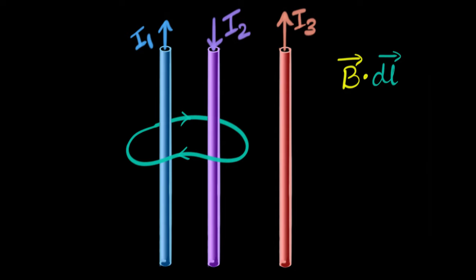So here's what Ampere is saying. At every point in space, the three currents are together producing a magnetic field, right? We know that current produces magnetic field. So maybe at this point, I'm just drawing random directions now. Maybe the magnetic field is this way. Maybe there's a point over here where the magnetic field is, I don't know, maybe this way. And maybe there's a point over here where the magnetic field is this way.